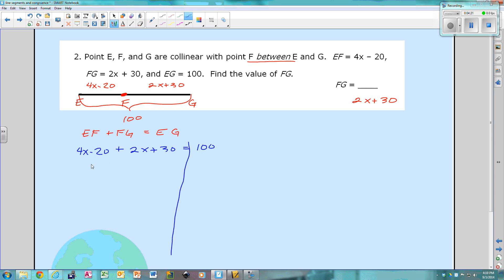So now I'm just going to solve for X. So I'm going to combine my like terms, 2X and 4X, so that's going to be 6X. Then I've got negative 20 plus 30, so that really just means 30 minus 20, which is 10, equals 100. So now subtract 10 from both sides. So that means 6X equals 90. Divide both sides by 6. So X is 15. So since X is 15, then I can go up here and plug it in. 2 times 15 plus 30, that's 30 plus 30, which is 60. So that means FG is 60. So if this piece, FG right here, if this piece is 60, that means this piece has to be 40, because together they have to add up to 100.